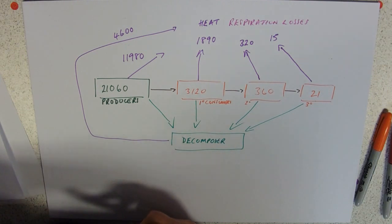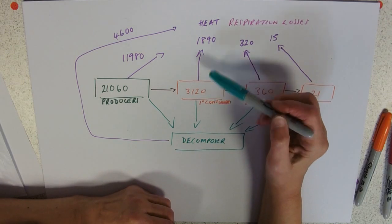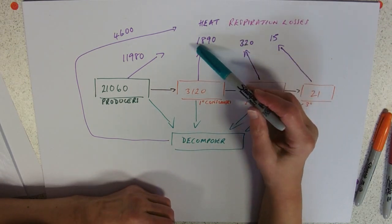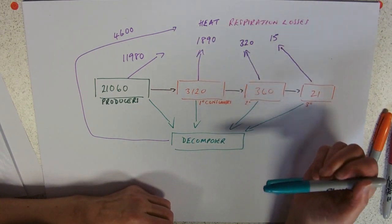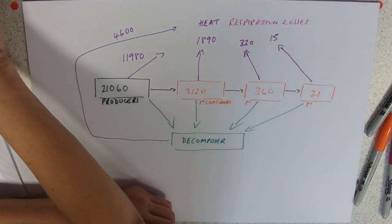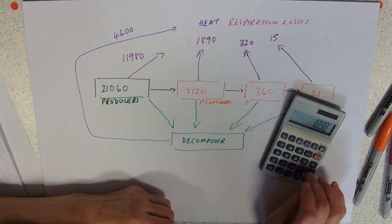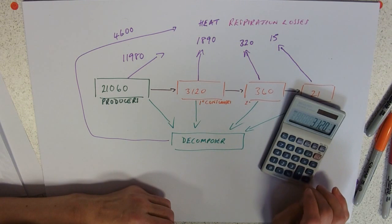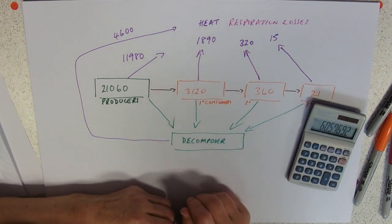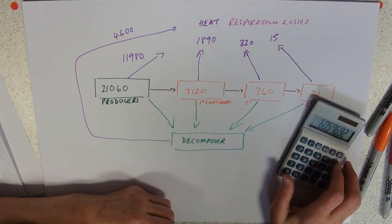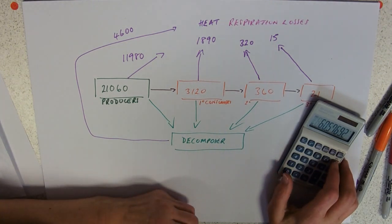In addition to calculations like what percentage of energy would be lost by respiration by the primary consumers, you'd take the number 1890 divided by the bigger number 3120 and multiply by 100. So 1890 divided by 3120 multiplied by 100 — they're using 60% of their energy in respiration.